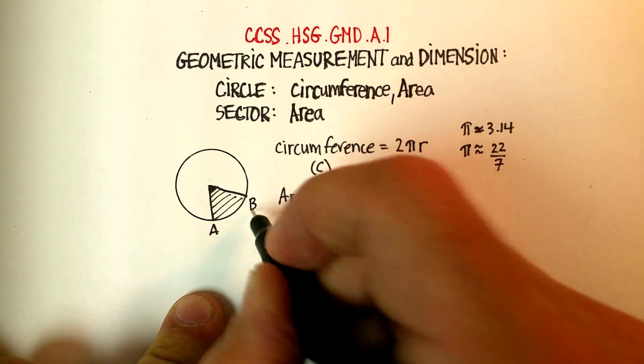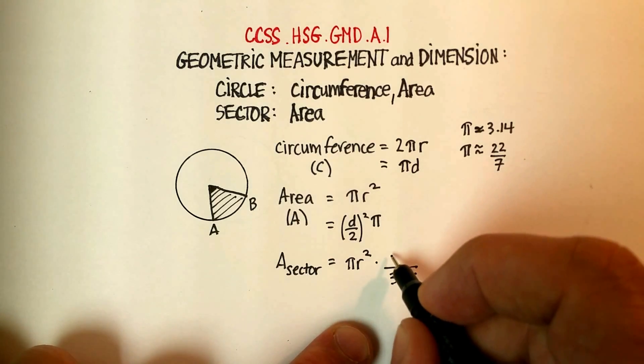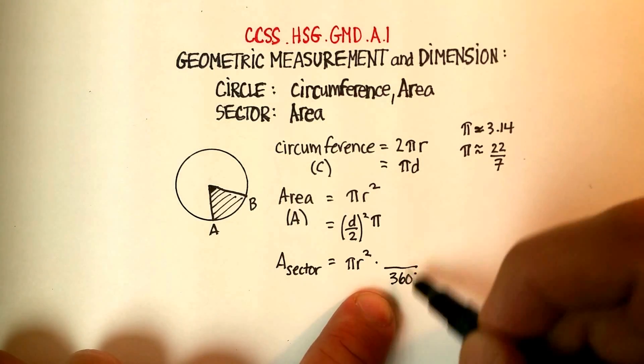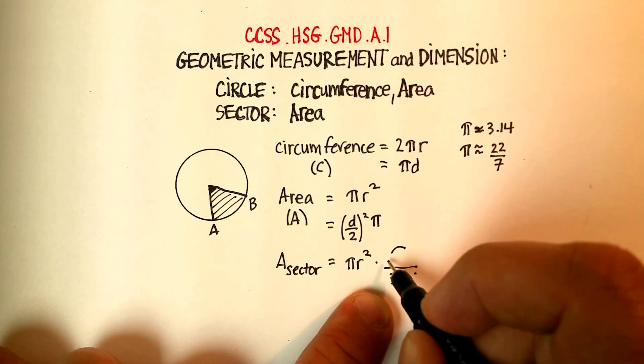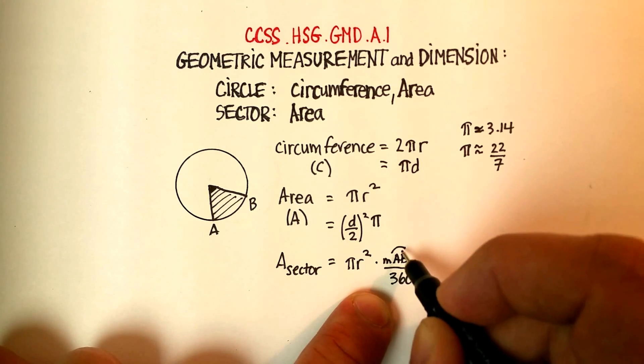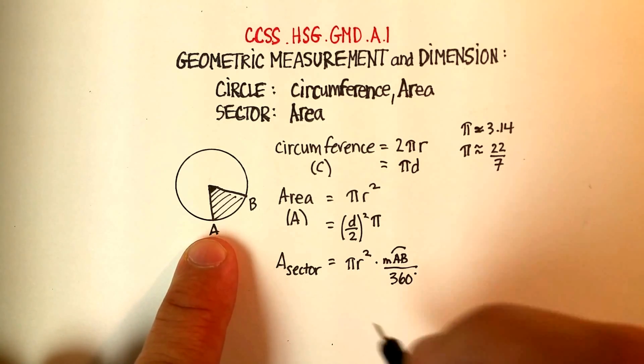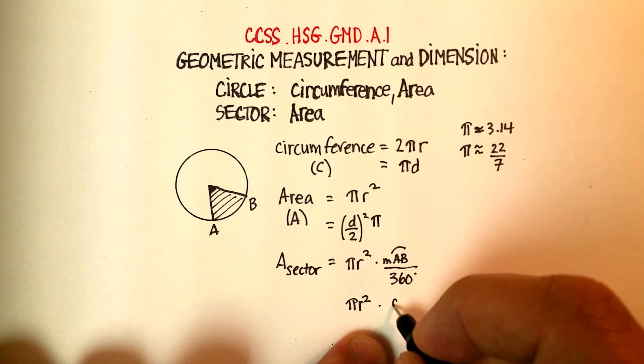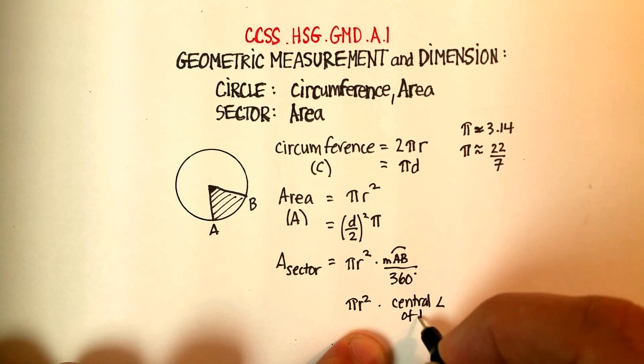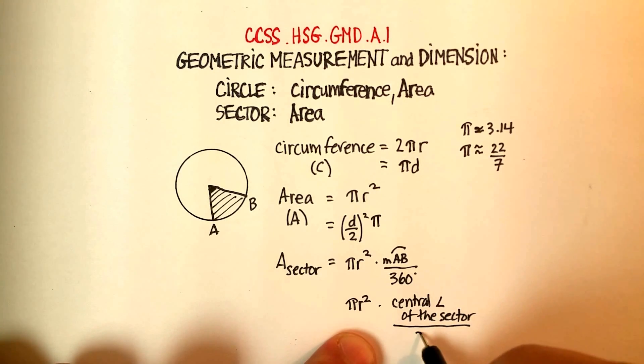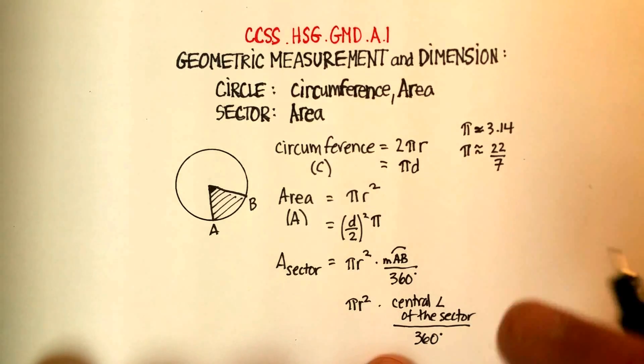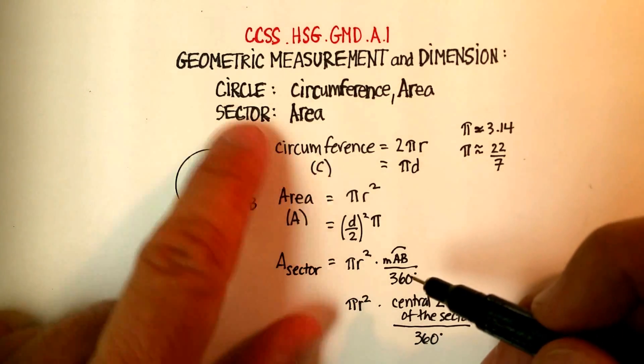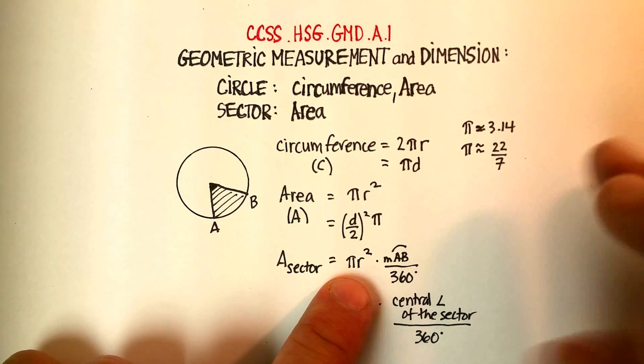So two ways to write this. Or it's also equal to the central angle of your sector divided by 360. Now intuitively that would make sense, because that would be a fraction of the overall circle.